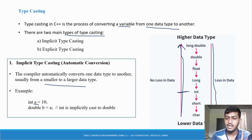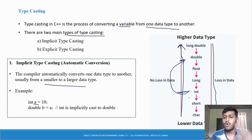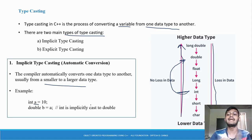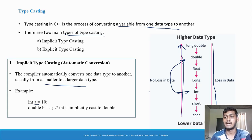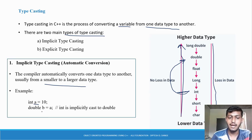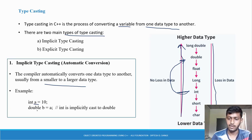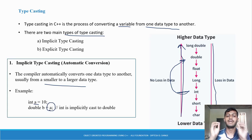We are converting integer to double. Integer is below, double is above — so we are converting from a smaller data type to a larger data type. This is implicit conversion. To do it, declare a second variable of type double, assign the original variable to it using the assignment operator — that's all.